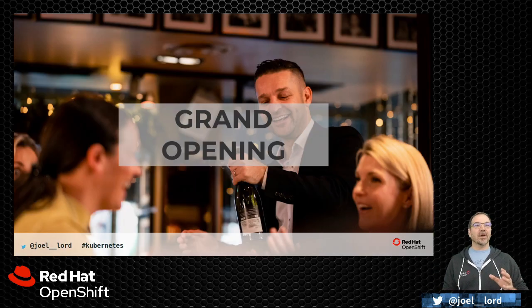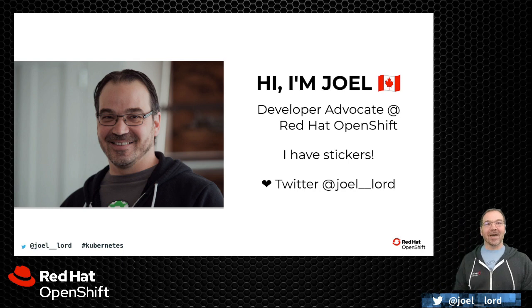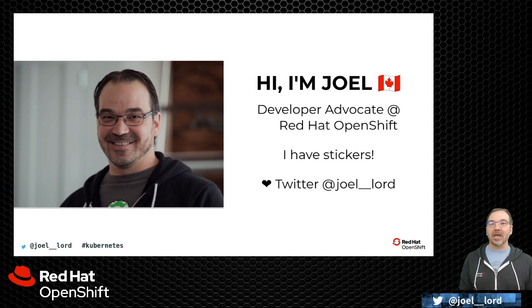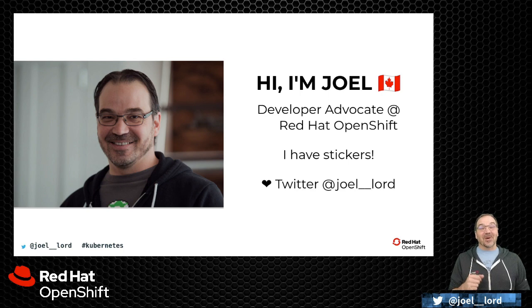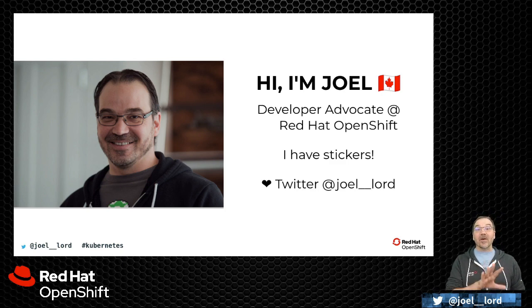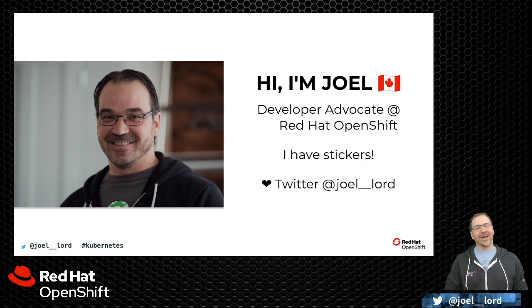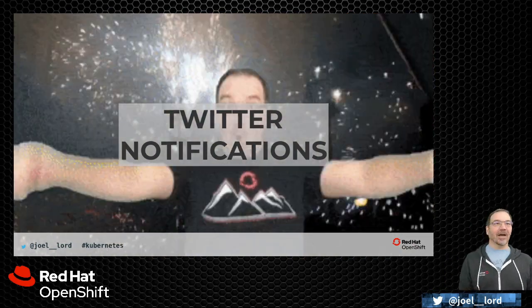So Kubernetes deploys more or fewer containers depending on what you need, distributes the load across servers, and takes care of all the networking. In order to see all of this, we're going to open a new restaurant. But first, let me introduce myself. Hi, my name is Joel. I work as a developer advocate for the Red Hat OpenShift platform — OpenShift is Red Hat's distribution of Kubernetes. Everything I'll show today you can use in OpenShift or directly on Kubernetes. I love Twitter, so feel free to reach out: Joel underscore underscore Lord.